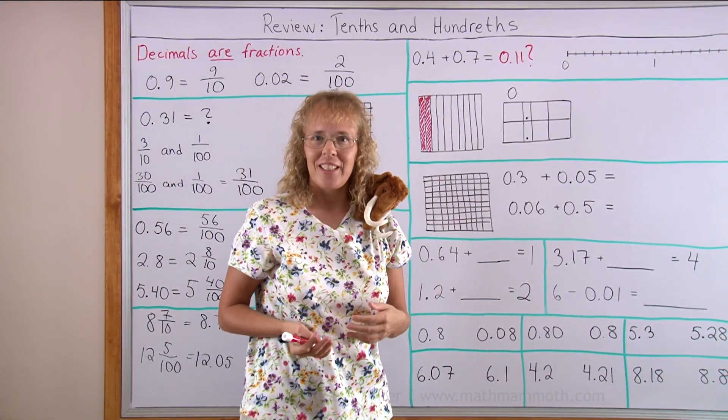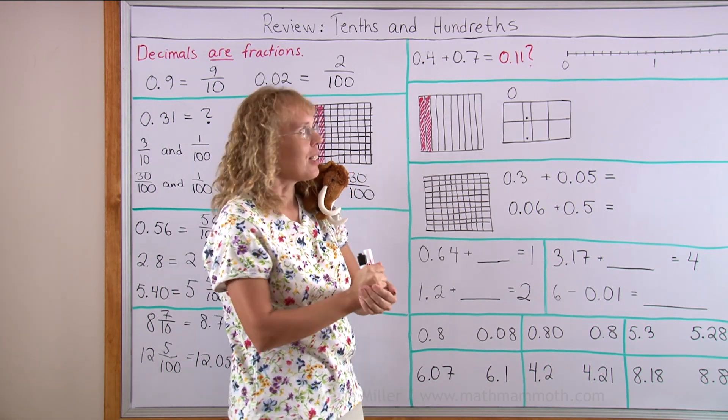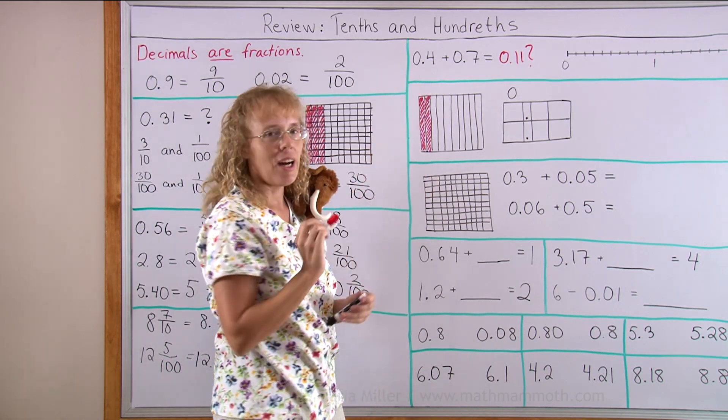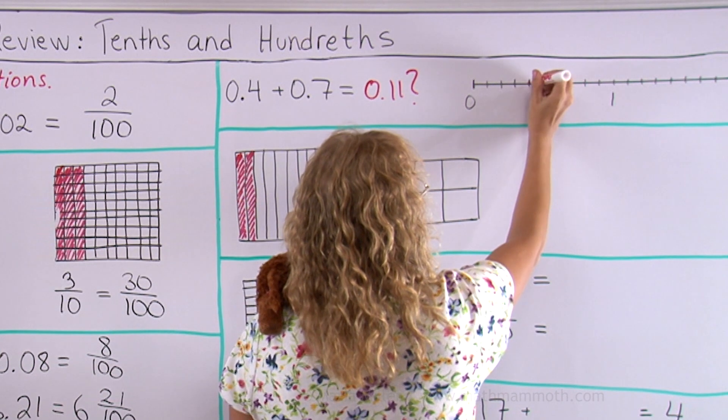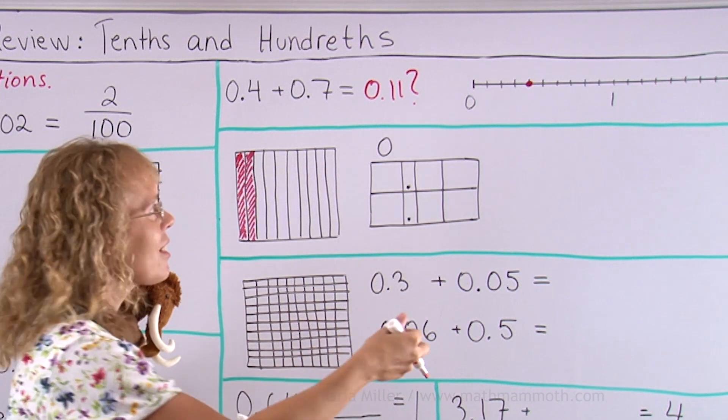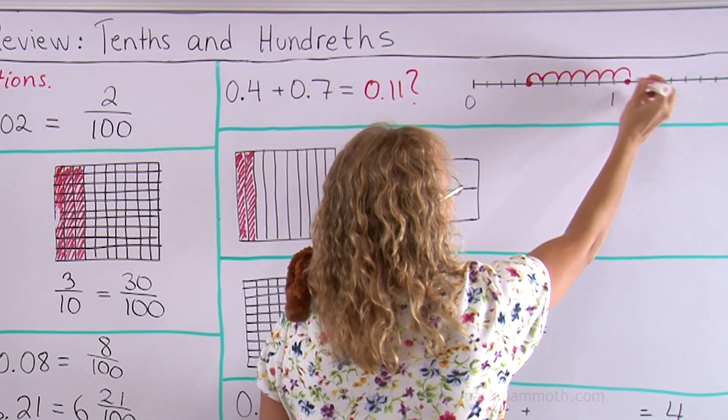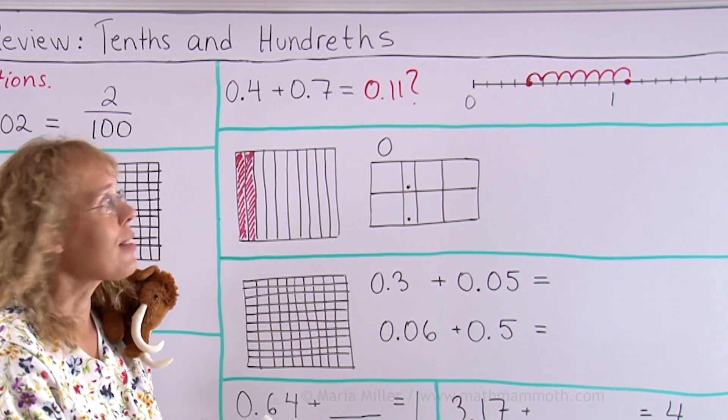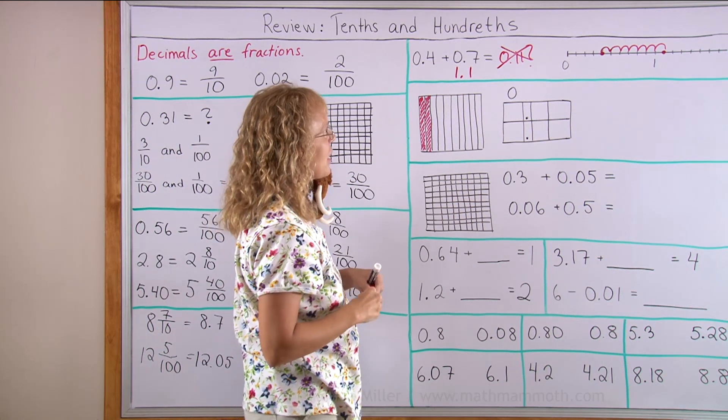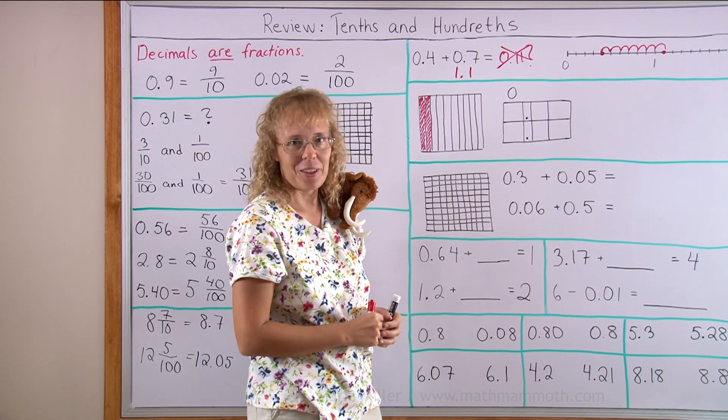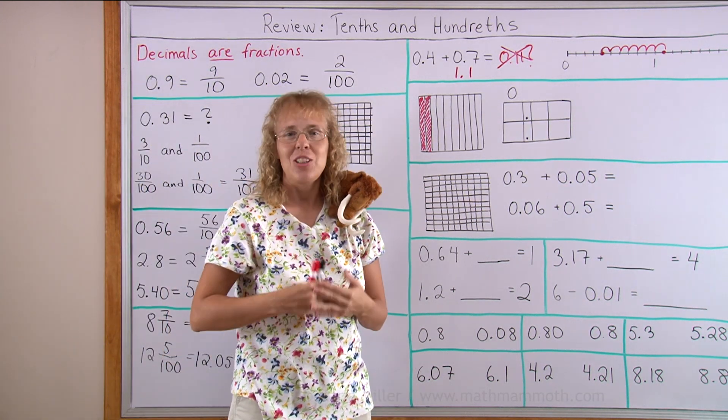This one here is showing a common student error. 0.4 plus 0.7 equals 0.11, not so. We can prove that by using a number line and making number line jumps. This addition is as if you start at 4 tenths. Here I drew a number line and from 0 to 1 it is divided into 10 parts. So 4 tenths is the fourth tick mark here. Then we add 7 tenths, so we jump 7 tenths. Where am I on the number line? I'm past 1 a little bit, 1 and 1 tenth. So remember this is wrong. The real answer is 1 and 1 tenth. You cannot treat decimals as if they were like whole numbers living on the other side of decimal point.